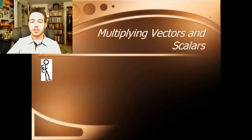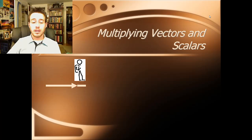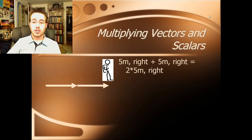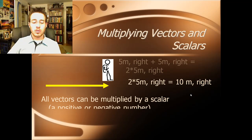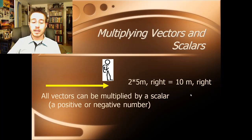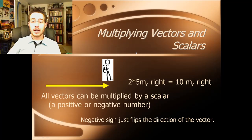Alright, so finally the last thing that we're going to talk about here is multiplying vectors and scalars together. So, let's take this example. We have a student and he walks 5 meters to the right and then 5 more meters to the right. We know already that this is going to be 10 meters to the right. However, it's also 2 times 5 meters to the right. So, we have a scalar here, 2 times a vector, 5 meters right. So, in other words, 2 times 5 meters to the right is equal to 10 meters to the right. So, all I want you to get from this is that all vectors can be multiplied by a scalar, either a positive or a negative number. Okay? All that means is that you take a multiple of the original vector. And a negative sign, all that does is flip it so that it goes the opposite direction. Negative of this vector would be the vector going the other direction from here to here. Okay?